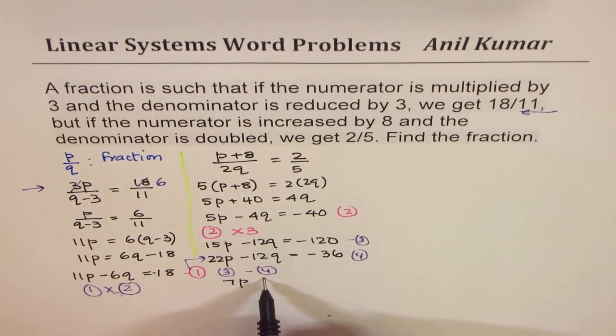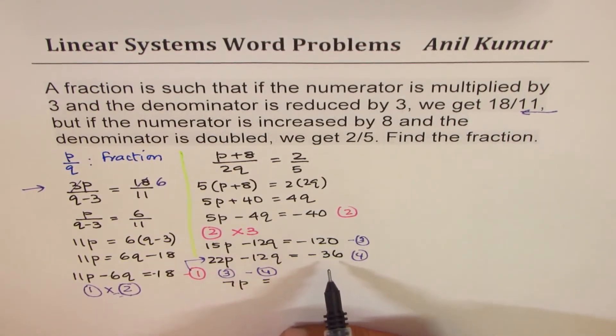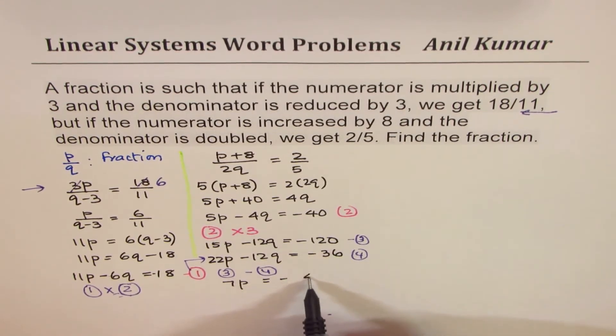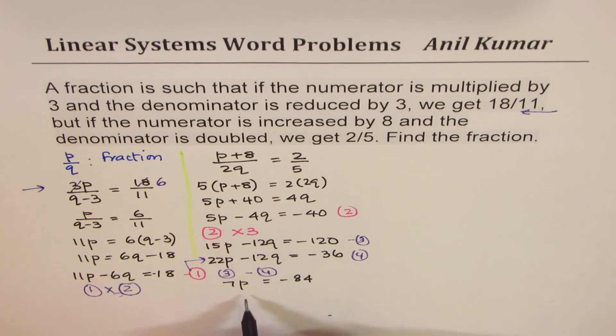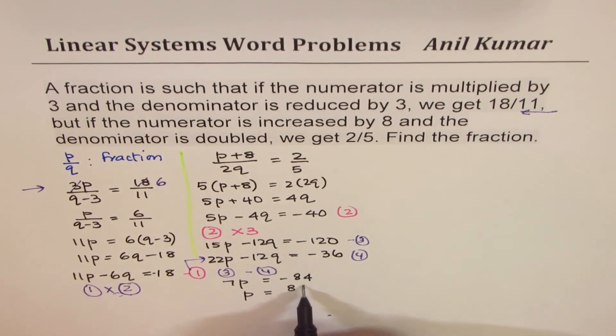That cancels out. And on this side, we get negative 120 minus this, so we get negative number, minus 120 minus negative 36 is negative 84. So from here, we can find what p is.